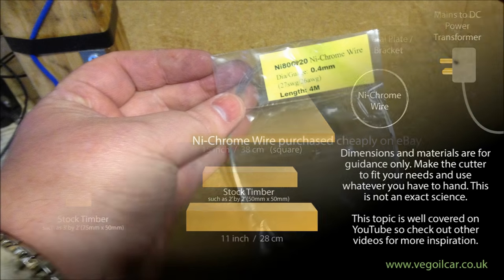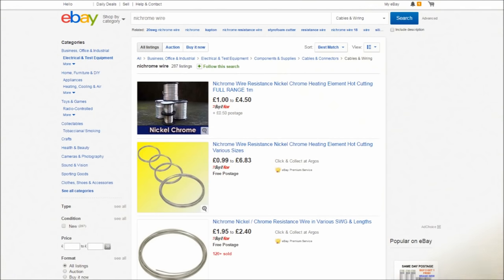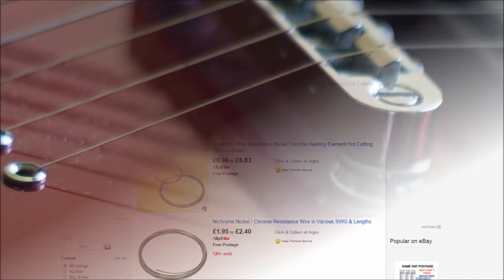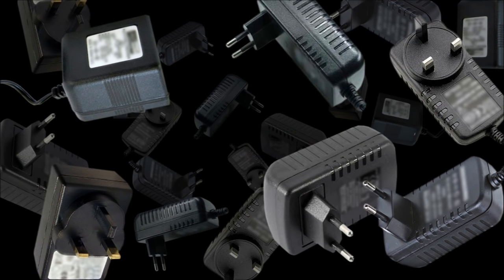I always have this habit of building with whatever I have to hand and I'd really recommend that you do the same, but the materials and dimensions shown here are a pretty good guide for you. What you probably won't have to hand is the wire and for that you're going to need nichrome wire. Fortunately, this is very cheap and easily available on eBay.